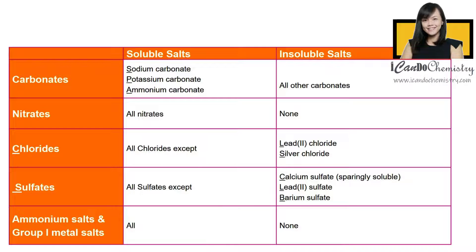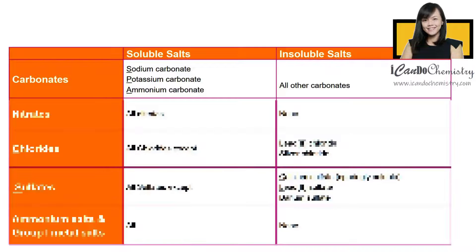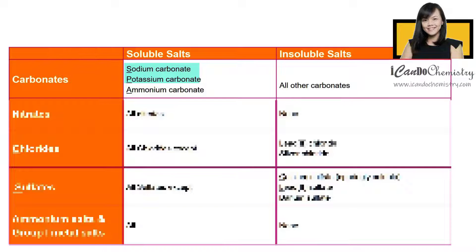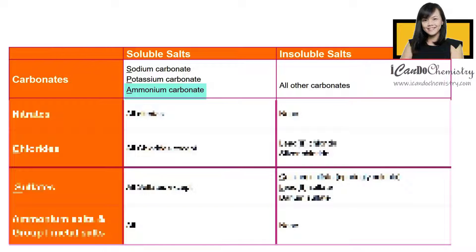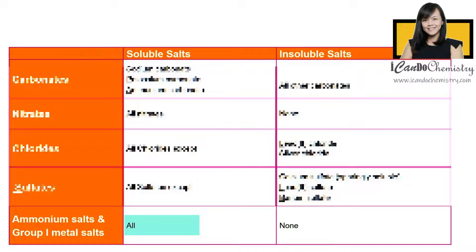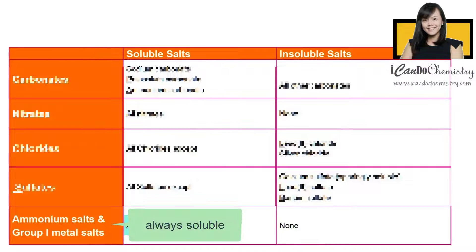Now let's focus on carbonate salts. All carbonates are insoluble except group 1 metal carbonates and ammonium carbonates. In fact, group 1 and ammonium salts are always soluble in aqueous solutions.